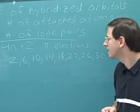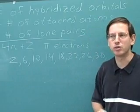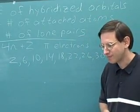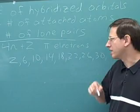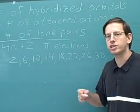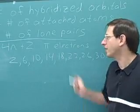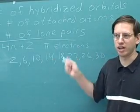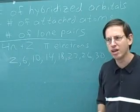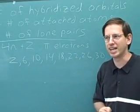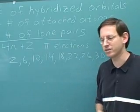Hückel's rule says that if the number of pi electrons is in this list, then the molecule is aromatic. The hardest thing we have to do is figure out which electrons in the molecule count as pi electrons — we don't want to count all the electrons, just the pi electrons. That's the main thing I want to focus on in these videos: how can you tell which electrons are the pi electrons?